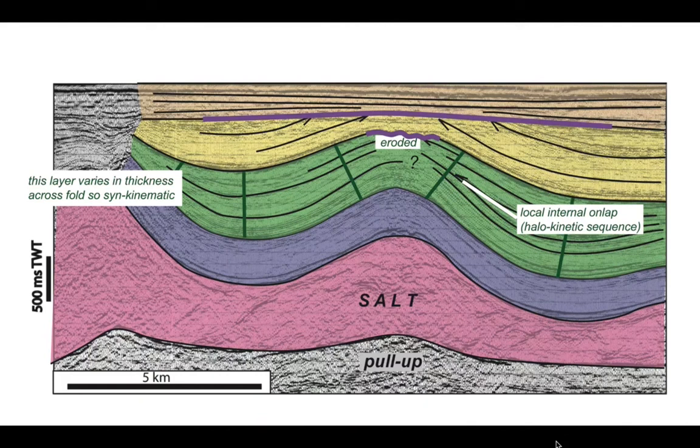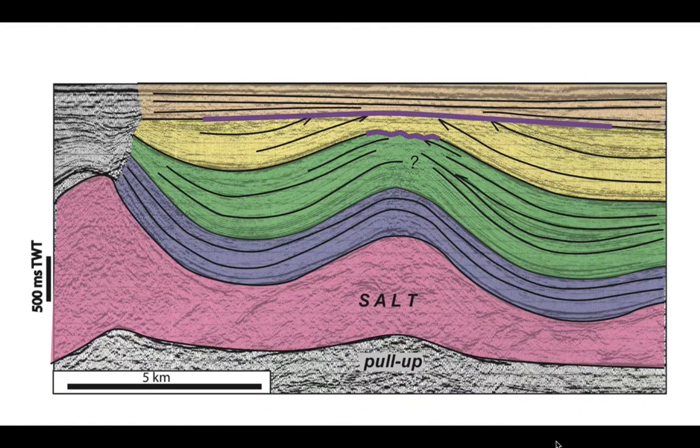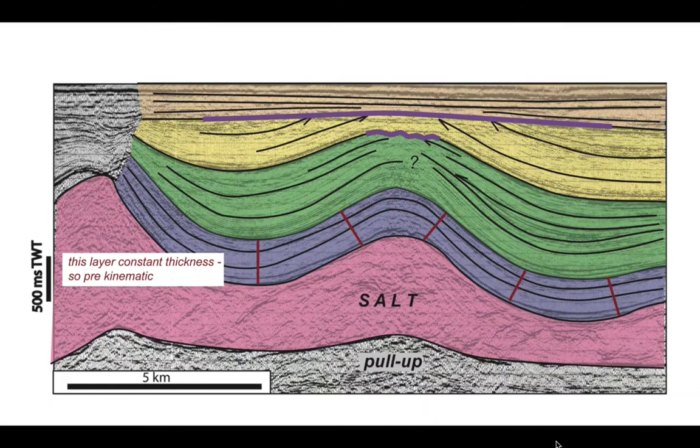Now let's move down to the mauve horizon, and in here we can pick stratal reflectors through here. This layer is pretty much constant thickness, so presumably is pre-kinematic with respect to the salt mobility.